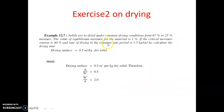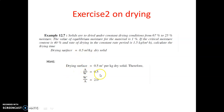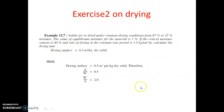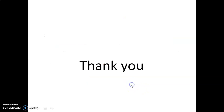There is also a similar example for you to solve in your notebook. Solids are dried under constant drying conditions from 67% to 25% moisture. The equilibrium moisture content is 1%, critical moisture content is 40%, and rate of drying is 1.5 kg/m²·hr. The drying surface is 0.5 m² per kg dry solid — meaning A/w' = 0.5, so w'/A = 2. Use the total drying formula and calculate the total drying period.